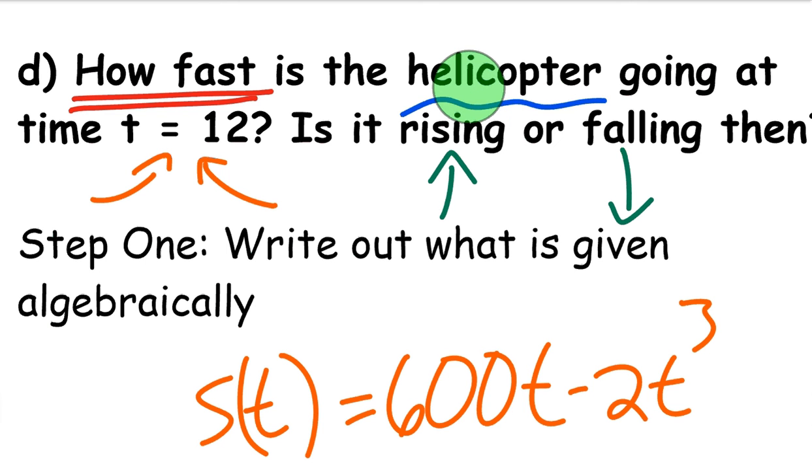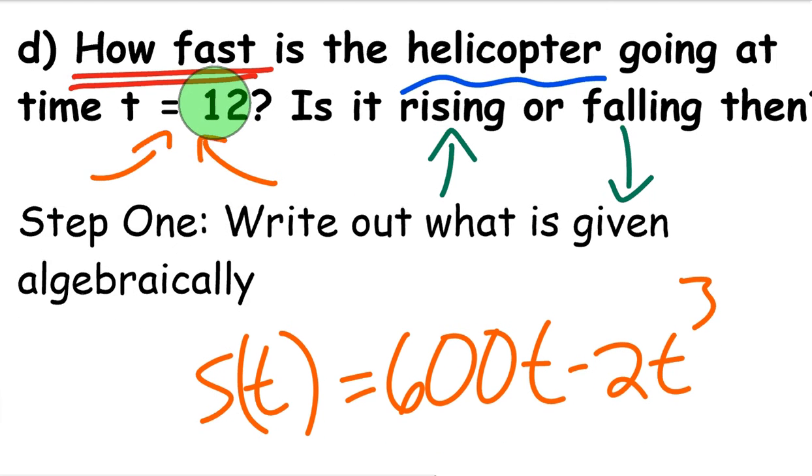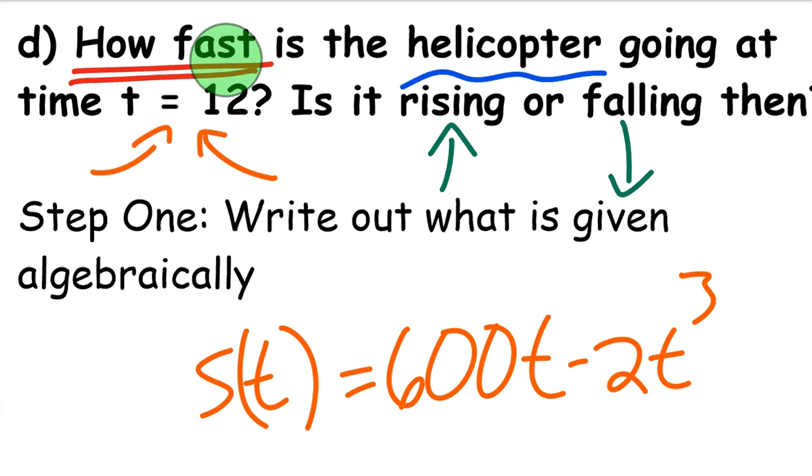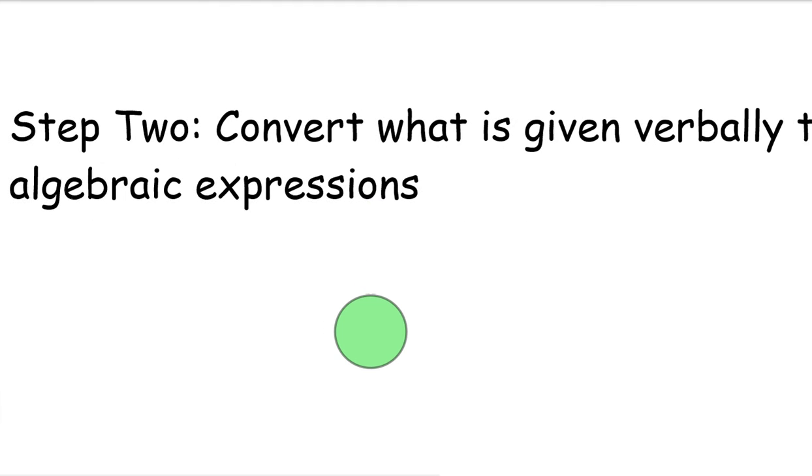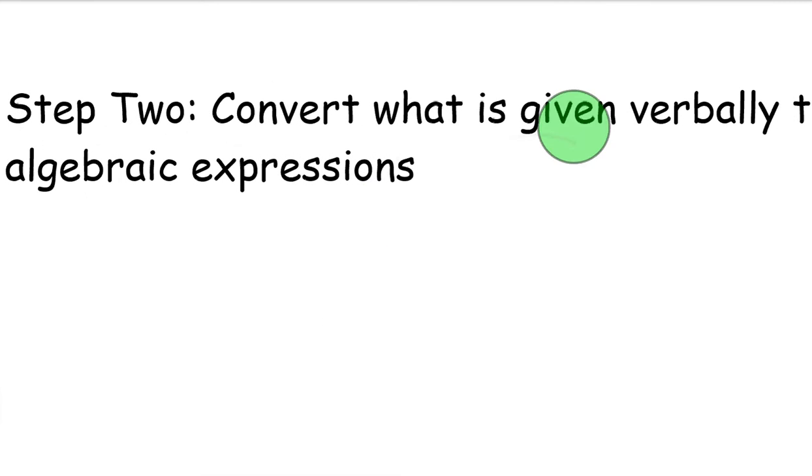So we can answer this two ways. We can answer given the velocity or the speed, and we've talked before about the differences between the two. Velocity is negative, speed is positive. So because we want to figure out whether it's rising or falling, we will indeed figure out the velocity. And of course, we can write out what the speed is as well.